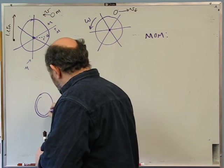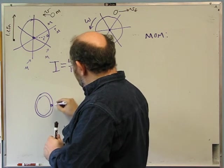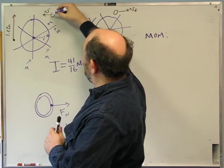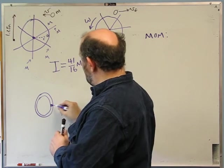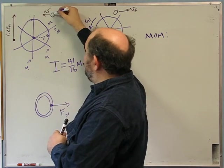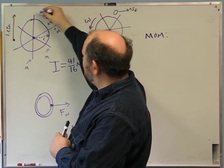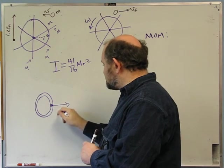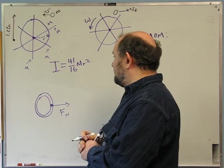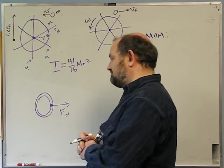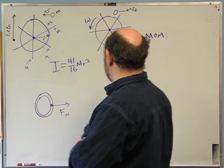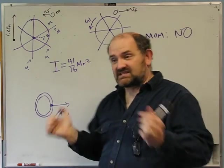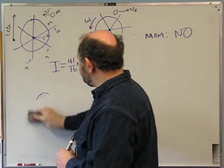For linear momentum: the wheel is fixed in place, so when the ball hits the wheel, the axle pushes back with a normal force. The faster the collision (smaller delta t), the larger this force must be. This external normal force means momentum is not conserved — it gets transferred to the earth through the axle.